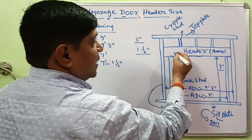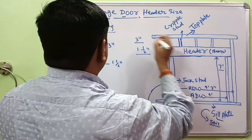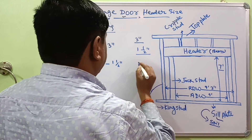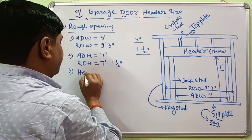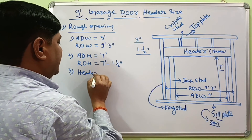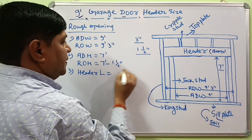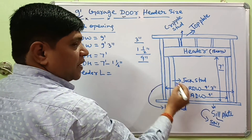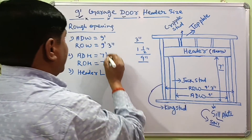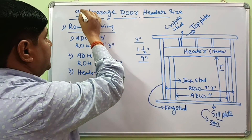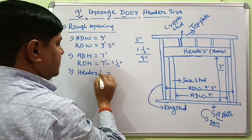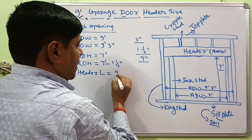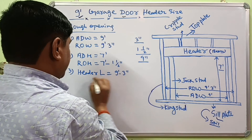What will be the header length for a 9 foot garage door? Generally, the header length will be 9 inches more than the actual door width. Since the actual door width is 9 foot, the header length will be 9 foot 3 inches.